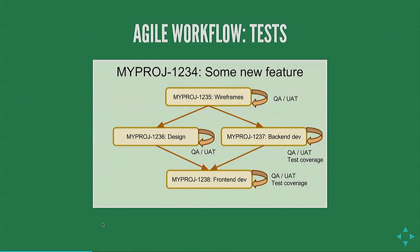So somebody makes the wireframes; QA is done by someone from the technical team checking if it's practical to implement in Drupal; then UAT is the client or product owner having a look to confirm the wireframe matches what they want. The same thing happens on the design part — a technical analysis is done, the client has remarks about the design. Then on the backend development, another colleague does a code review: is this good, is the code well-written, are there security vulnerabilities? The QA engineer also looks at the tests that were written for this feature, and the client checks if it works correctly. The same process repeats for frontend development.